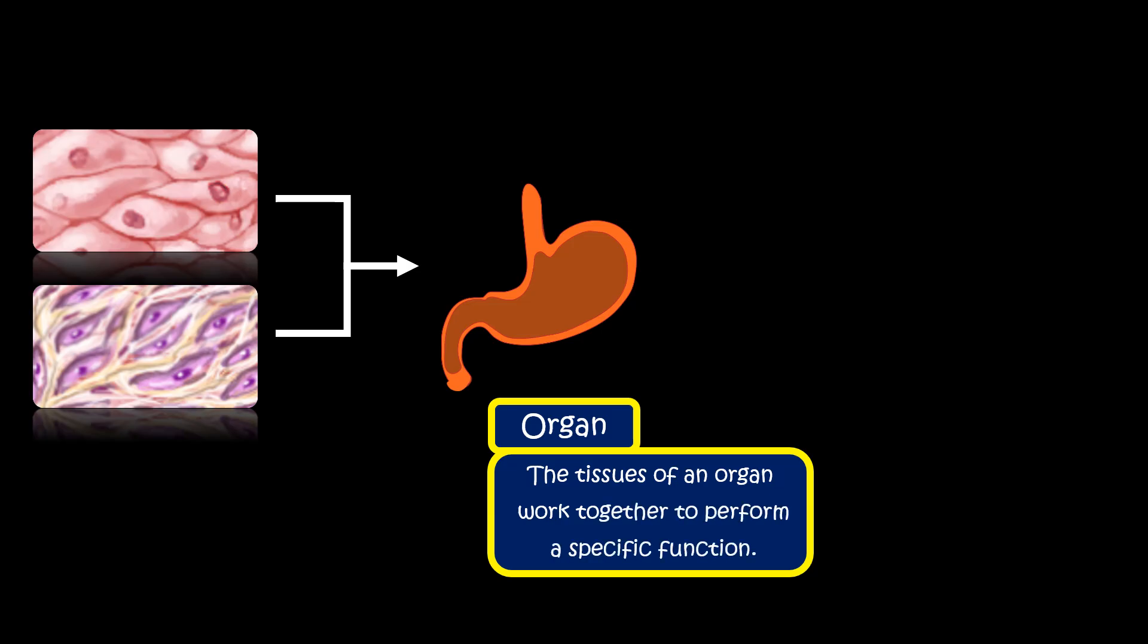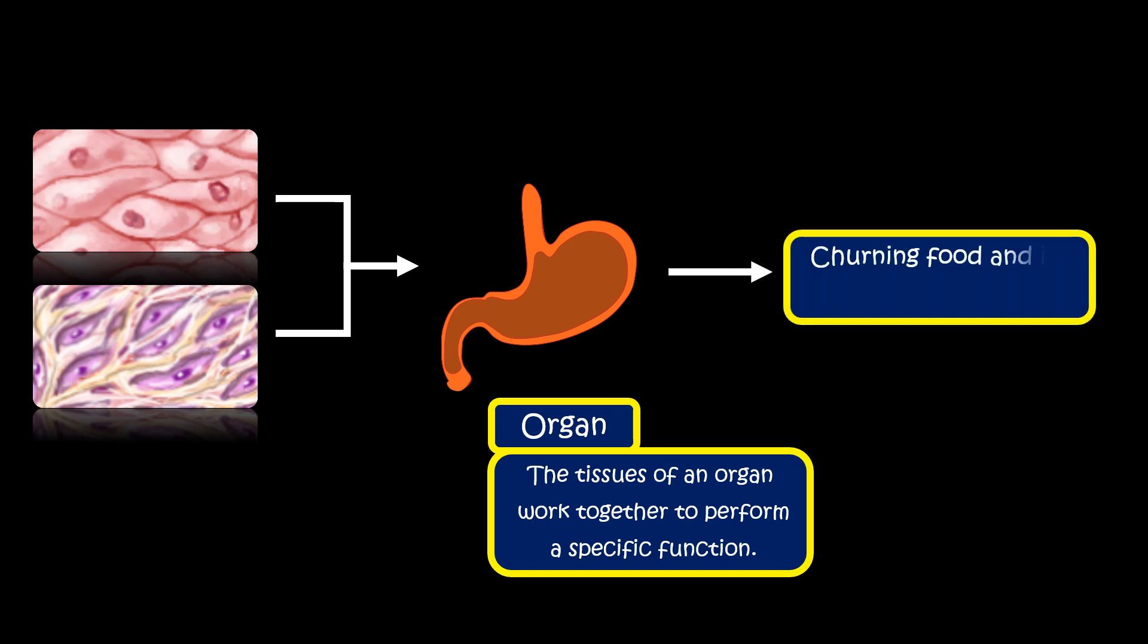For example, stomach is an organ, and it performs the specific function of churning the food and its partial digestion.